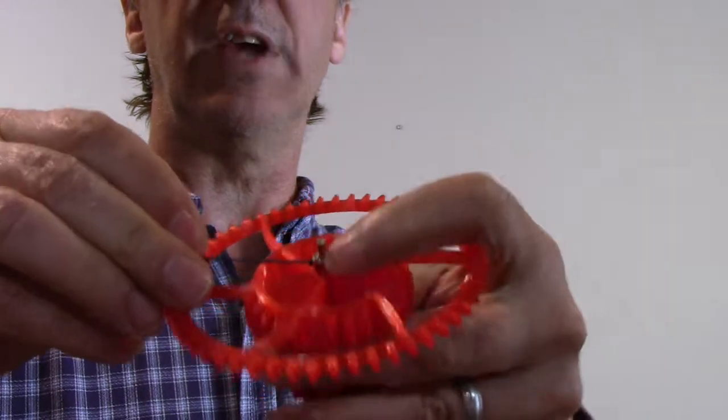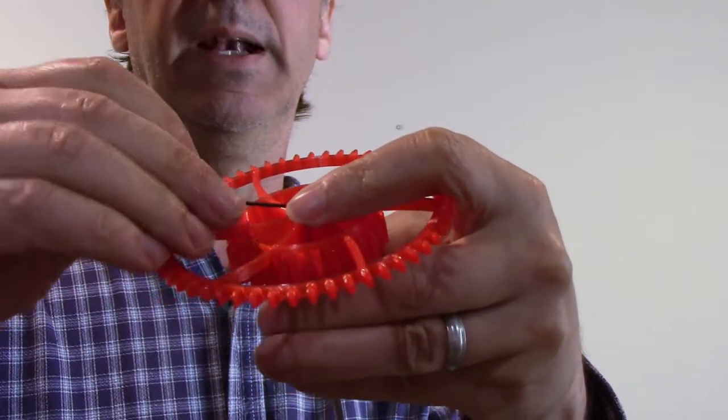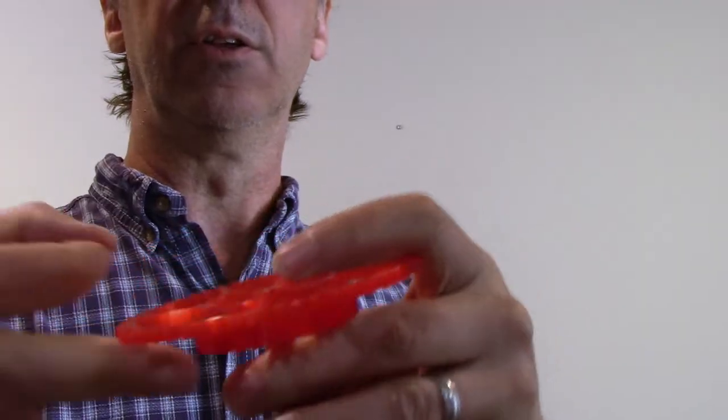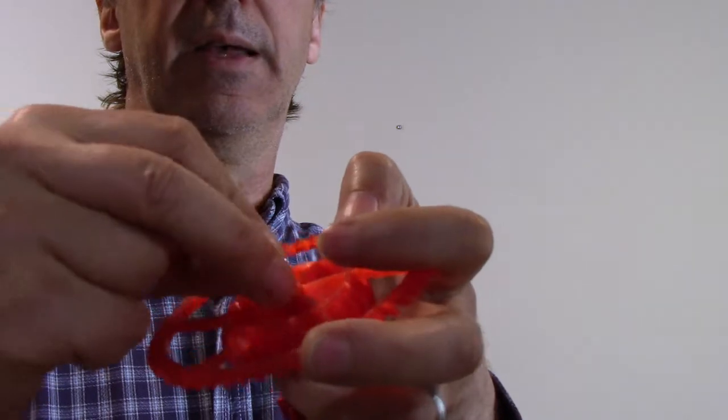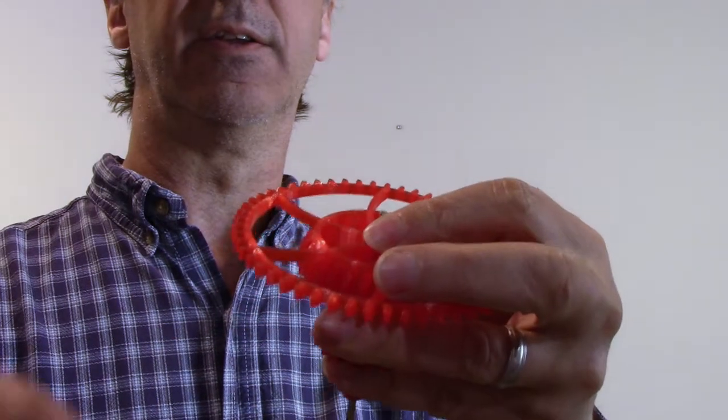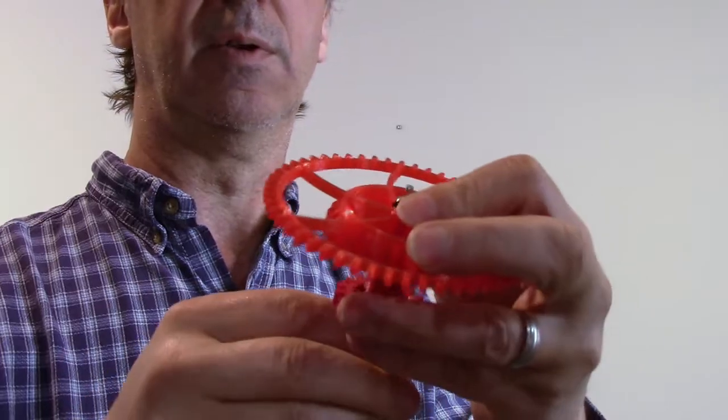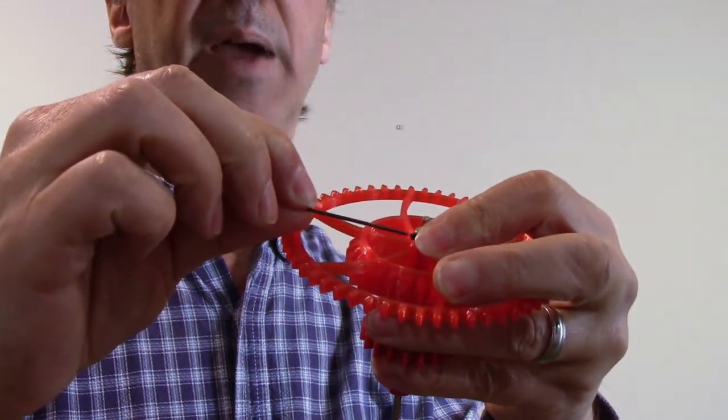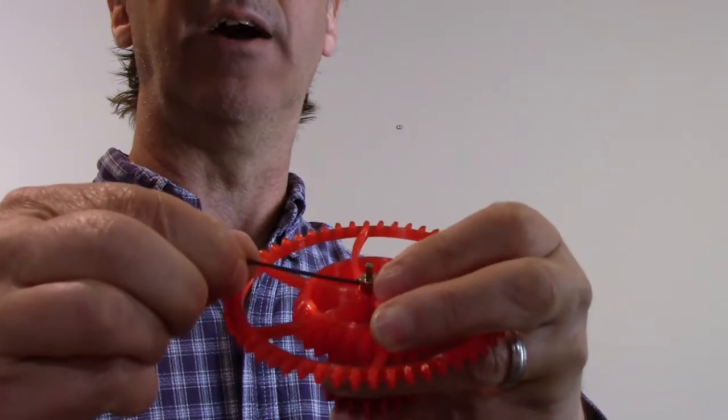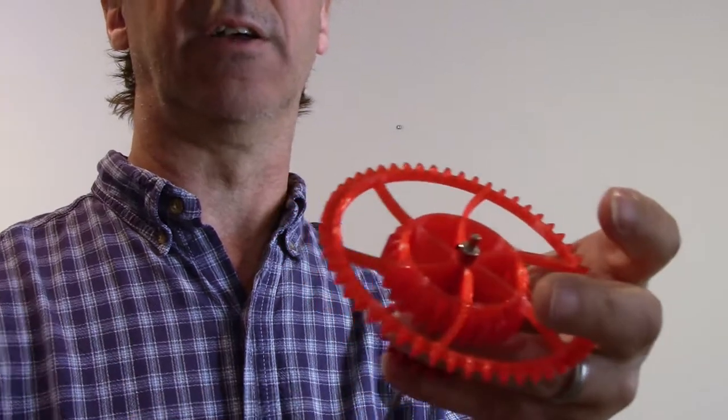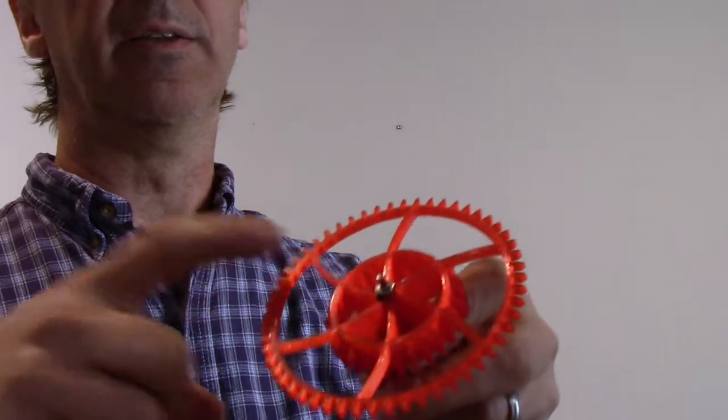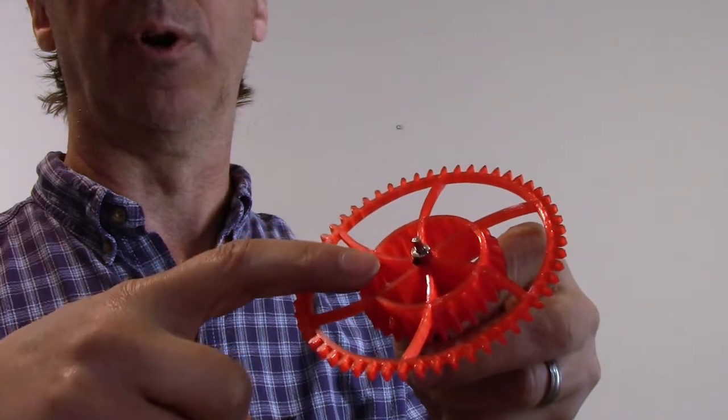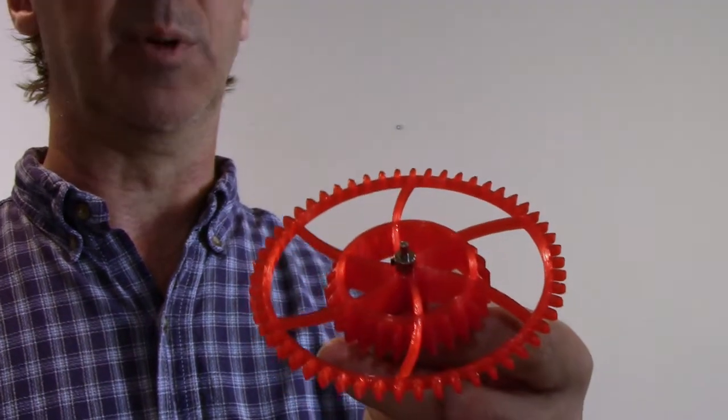If you used shaft collars to put the minute hand assembly together it's really easy to remove the old gear 4 and add in the modified gear 4 to fix the problem. Then all you have to do is add the shaft collar back to the shaft. Tighten it down with an allen wrench and the clock is ready to be assembled back together. If you didn't use shaft collars and this is a press fit then you actually have to pull off the old gear 4 and press it into position. Much easier if you built a clock using shaft collars.